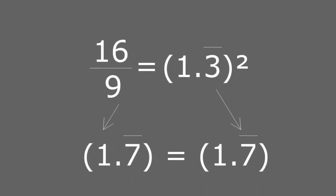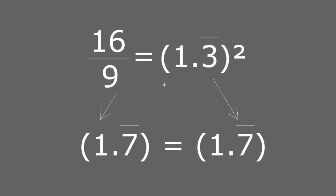When we perform that operation, we see that 16 divided by 9 equals 1.7, and the 7 is recurring, meaning that the 7 repeats infinitely after the decimal point. And 1.3 squared is exactly the same thing, 1.7, with the 7 recurring.